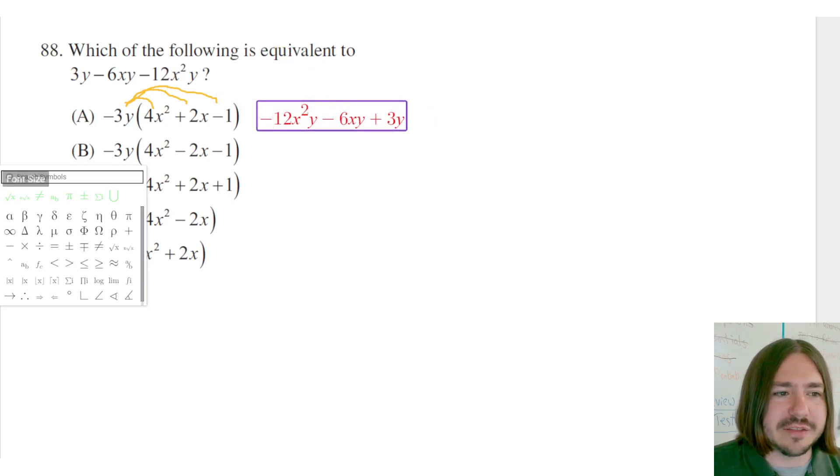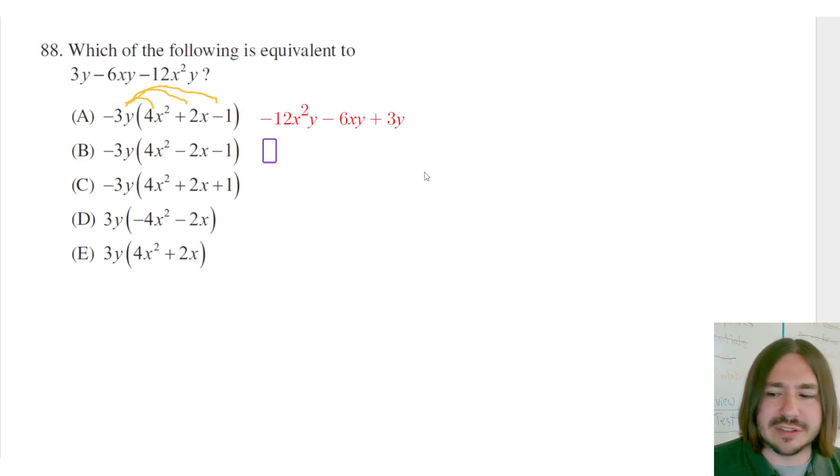Okay, we don't even need to check the rest of them, but if you want to double check you can. B would simplify to negative 12x squared y plus, because you got a negative times a negative, plus 6xy, which is not what we want. We want the negative 6xy and then plus 3y. So it's not gonna be B.